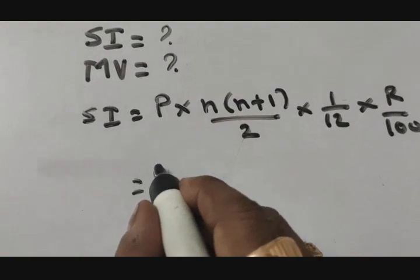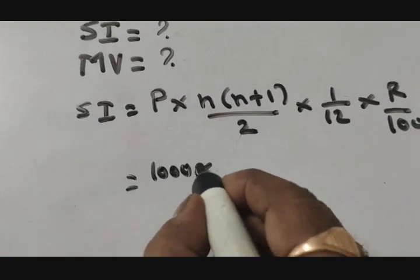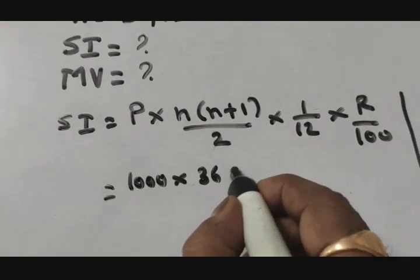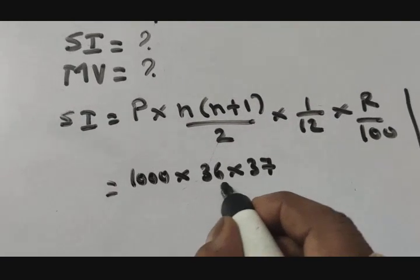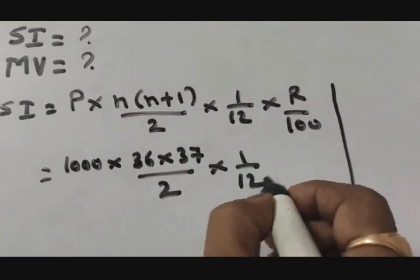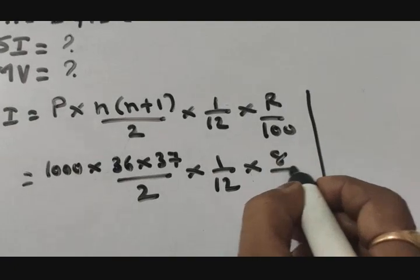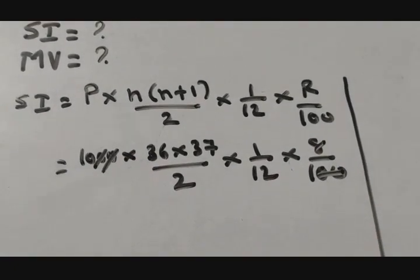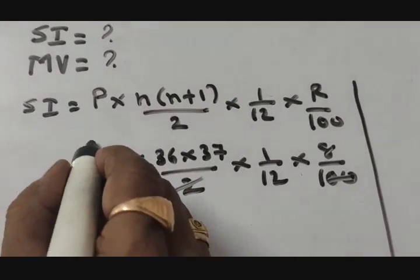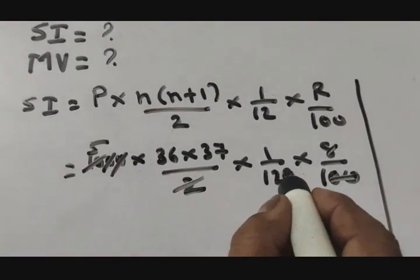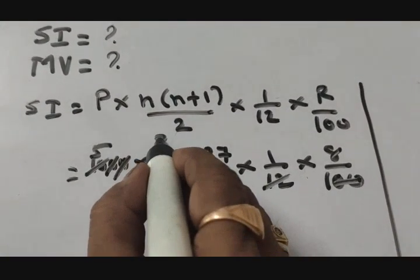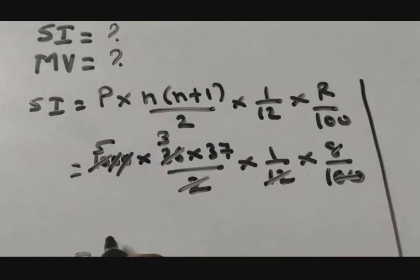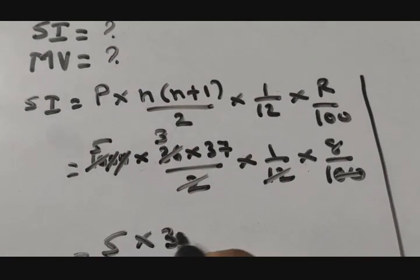Now principal, that is 1000 rupees, multiply by n, 36, multiply by 36 plus 1, 37, upon 2, multiply by 1 upon 12, rate of interest is 8 upon 100. These two zeros and these two zeros cancel, two ones up, two fives up. Then 12 and here 3.